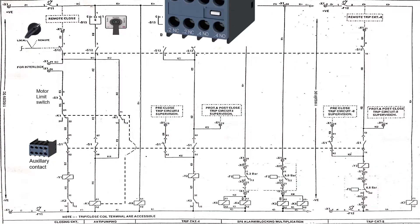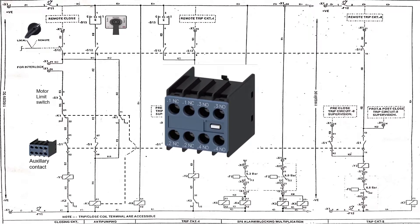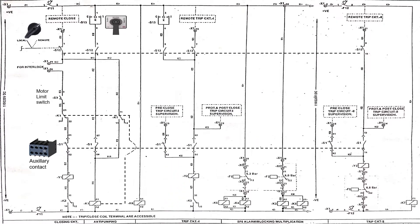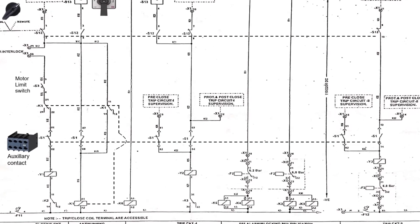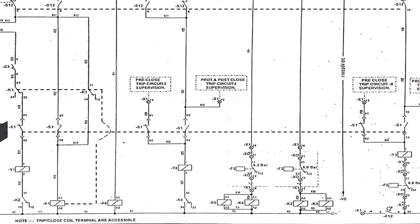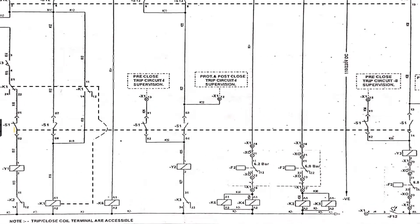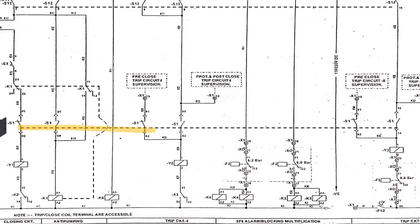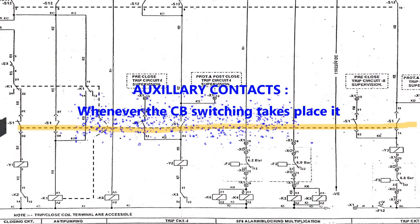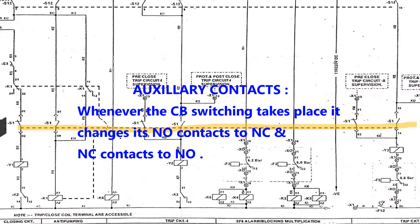Next are the auxiliary contacts. Depending on the requirement, auxiliary contacts can be 3, 6, or many more. They are shown by the dashed line. Some contacts are NO and some are NC. Whenever there is a switching operation — that is, closing or tripping of the circuit breaker — the contacts will change position: NO will turn into NC and NC will become NO.